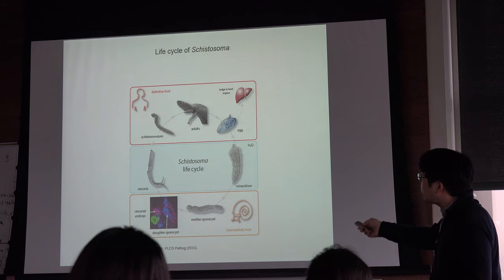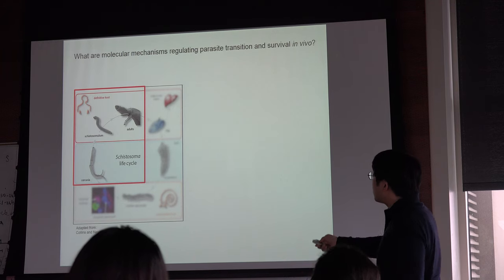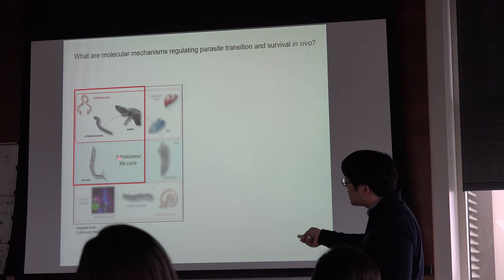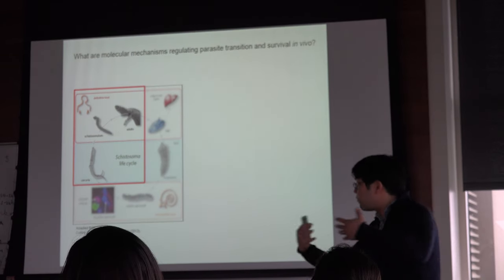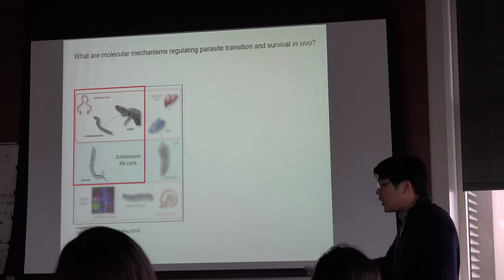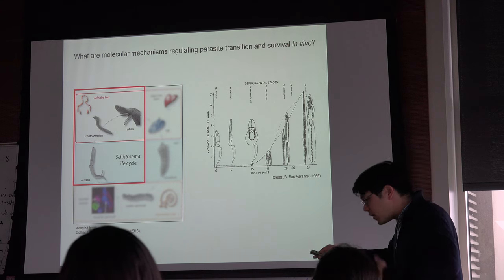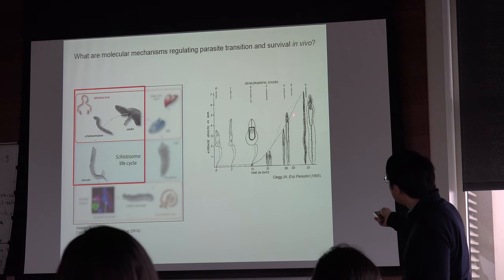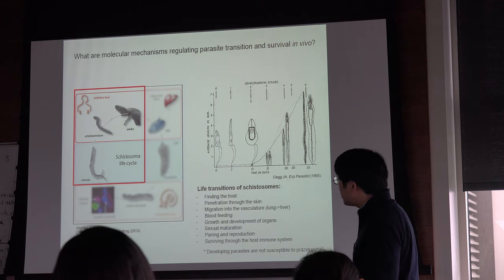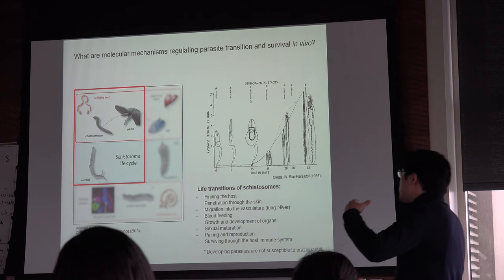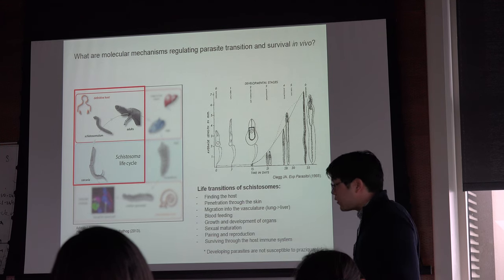I'm really interested in understanding the molecular mechanisms regulating this process, particularly the transition of how cercariae can completely switch their environment to become schistosomula, migrate into the blood vessel, feed on blood, and grow 100-fold in length while making all necessary organs including reproductive organs, all while surviving through the host's immune system and living comfortably for decades.